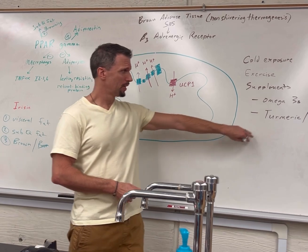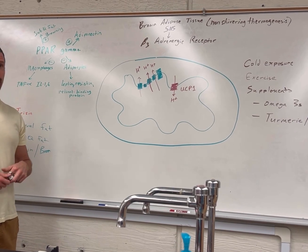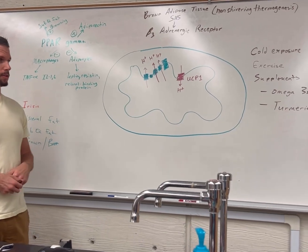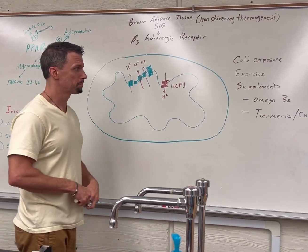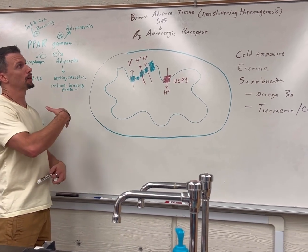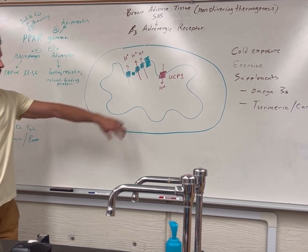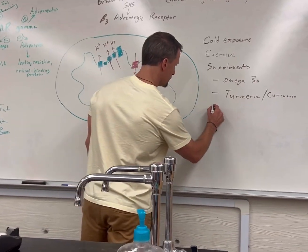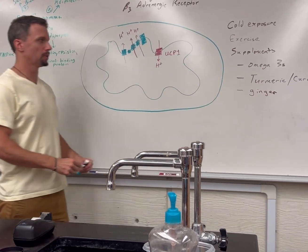It prevents prostaglandin production just like NSAIDs do, like Advil. It's been shown to prevent Alzheimer's disease. In India where they eat turmeric with just about every meal, they have the lowest Alzheimer's in the whole world. Studies show it can help clear beta amyloid plaques. It also helps cause white fat to beige and brown, increases mitochondriogenesis, and increases gene expression of uncoupling protein 1.